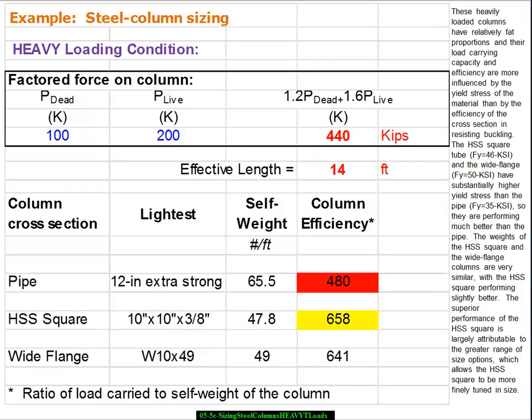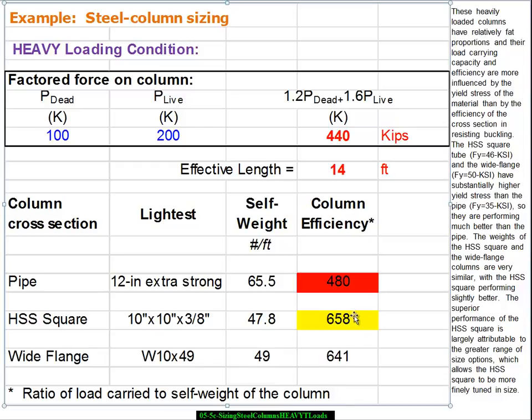And if we highlight a few boxes we see right there is the winner. The HSS squared and the wide flange are very similar in strength.